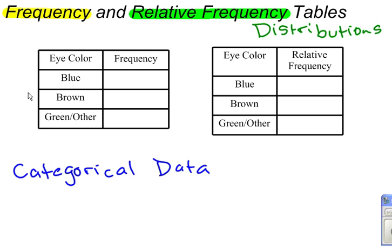So let's say I was going to collect eye color. I do a survey of my classes, and I ask them, just very basic, what is their eye color? Blue, brown, green, or other? Remember, this is categorical data.